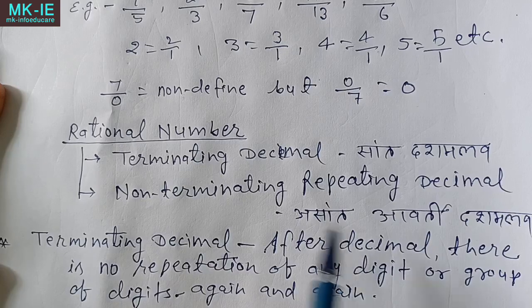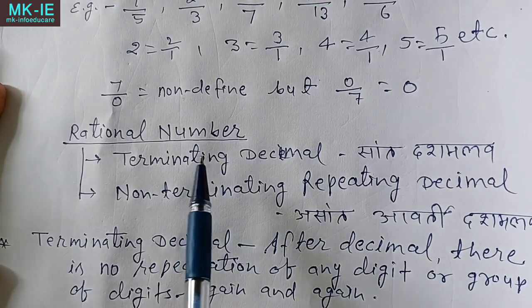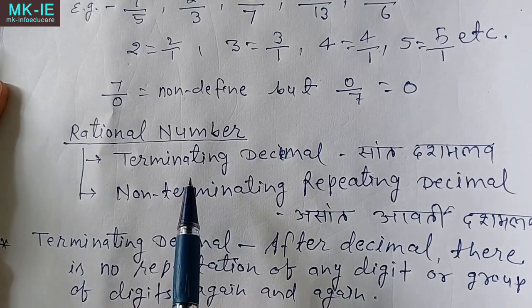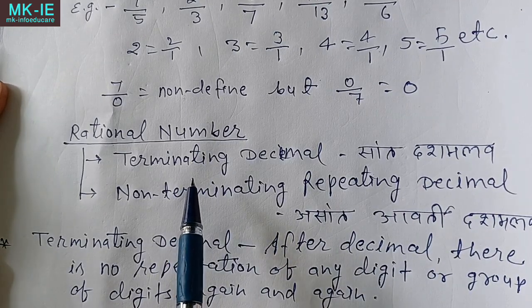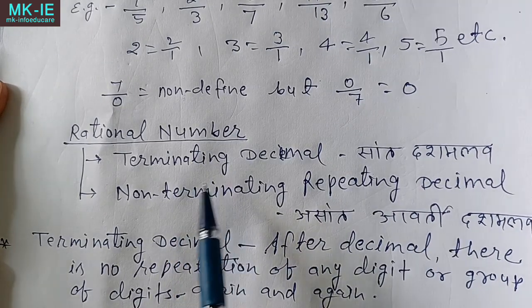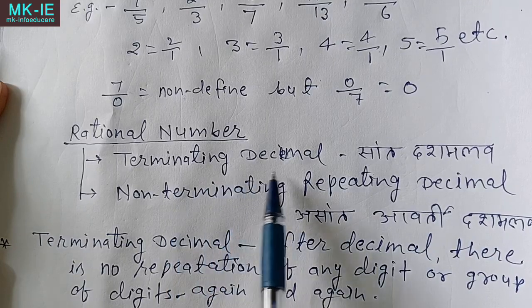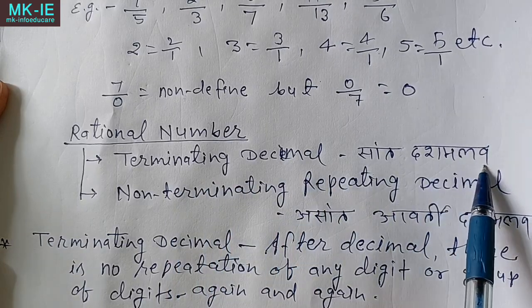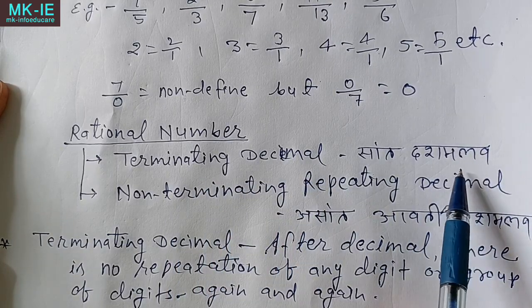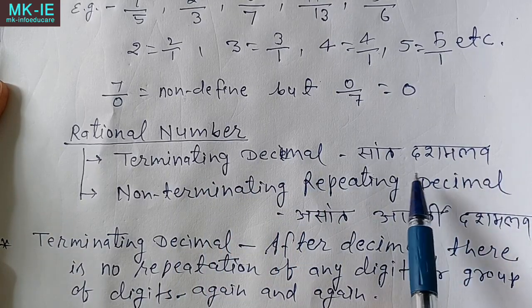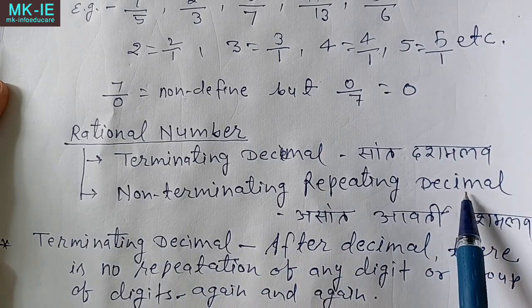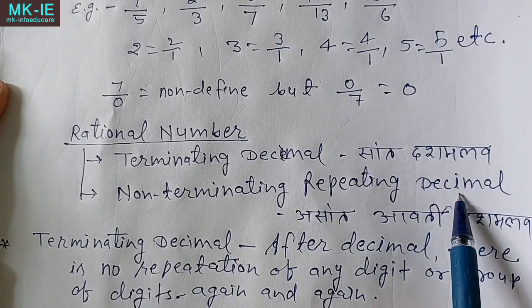The rational number can be expressed in two ways: either as a terminating decimal, or as a non-terminating repeating decimal.